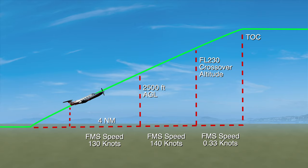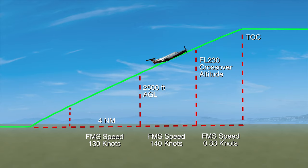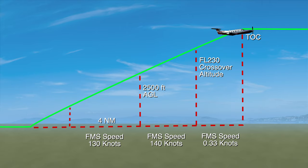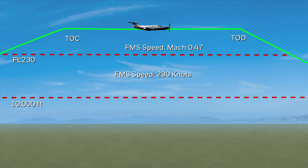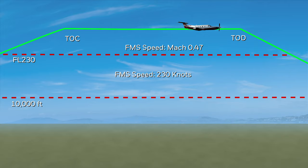As the aircraft continues the climb, the FMS target speed changes to Mach 0.33 at flight level 230. When the aircraft reaches the cruise altitude, the speed defaults to 230 knots if cruising below flight level 230, or Mach 0.47 if above flight level 230.